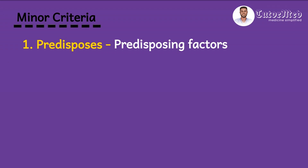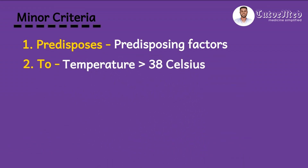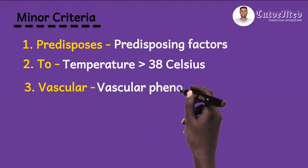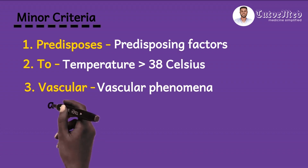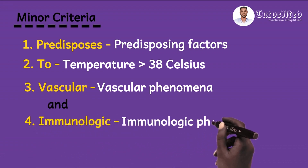'To' stands for temperature more than 38 degrees Celsius. 'Vascular' stands for vascular phenomena, which includes the presence of Janeway lesions and evidence of arterial emboli, such as embolic strokes. 'Immunologic' stands for immunologic phenomena, like the presence of Osler's nodes.